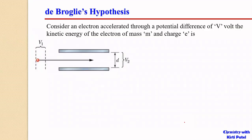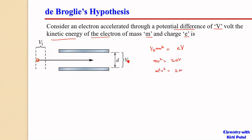Let us consider an electron accelerated through a potential difference of V volts. If an electron of mass m and charge e is accelerated through a potential difference of V volts, then the kinetic energy associated with this electron is (1/2)mv², which equals the charge on the particle multiplied by the potential difference: (1/2)mv² = eV. Rearranging gives mv² = 2eV, and multiplying both sides by mass gives m²v² = 2meV.